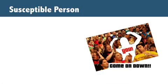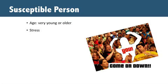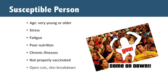The final link in the chain of infection is that the person being infected must be vulnerable or susceptible to the infectious agent. Some of the factors that affect the susceptibility of the person or host are being very young or older, high stress, being fatigued or worn out, having poor nutrition, having other diseases and illnesses such as diabetes, obesity, renal disease, or lung disease, not being vaccinated, and having breaks in the skin. Certain medications, like chemotherapy, can make a person more likely to become infected.